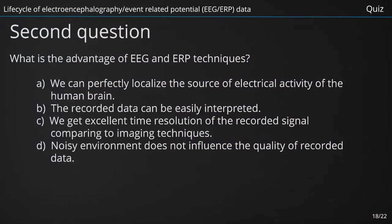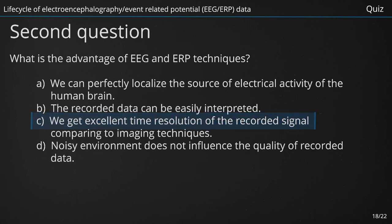What is the advantage of EEG and ERP techniques? A. We can perfectly localize the source of electrical activity of the human brain. B. The recorded data can be easily interpreted. C. We get excellent temporal resolution of the recorded signal comparing to imaging techniques. D. Noisy environment does not influence the quality of recorded data. The right answer is C — We get excellent temporal resolution of the recorded signal comparing to imaging techniques.